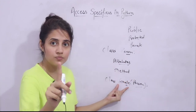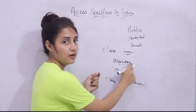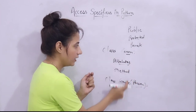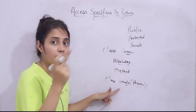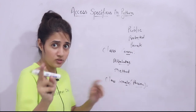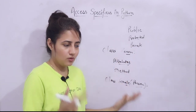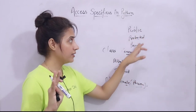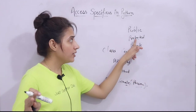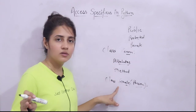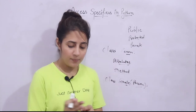Private means not even the derived class can use those attributes and methods. If some attribute is private in the base class, it will not be accessible in the derived class either. So to summarize: public means anyone outside or inside the class can use it; protected means within the class and within the derived class only; private means within that class only.